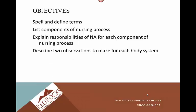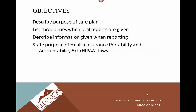The objectives of this unit: spell and define terms at the beginning of the chapter, list the components of the nursing process, explain the responsibilities of the nurse aide for each component of the nursing process, describe two observations to make for each body system, the purpose of a care plan, three times when oral reports are given, describe information given when reporting, and the purpose of the HIPAA laws.